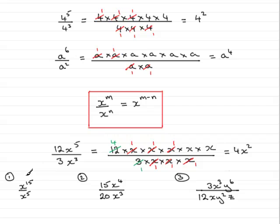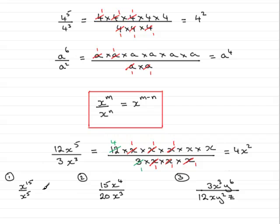OK, now here are a few questions I'd like you to try. The first is x to the power 15 over x to the power 5. The second is 15x to the power 4 all divided by 20x cubed. And the final one is 3x cubed y to the power 6 all divided by 12xy squared z. Hopefully you won't have to write these out in full — you'll be able to use the rule and cancel the numbers as shown. You can pause the video, come back, and I'll give you the answers in a few moments.